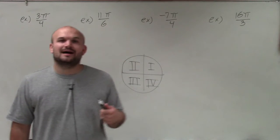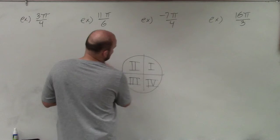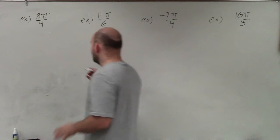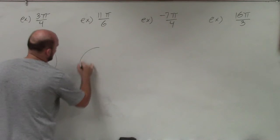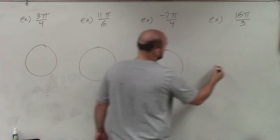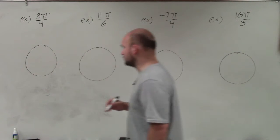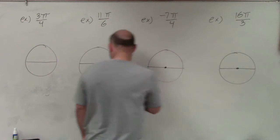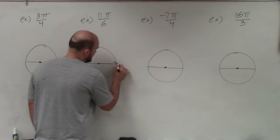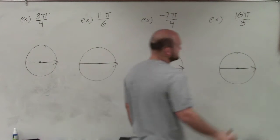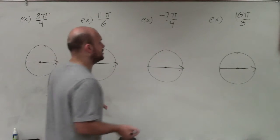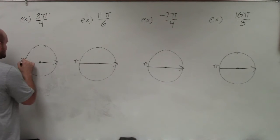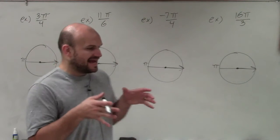I'm going to erase this since I have them memorized, but you'll want to have them written down if you don't. When sketching angles, the main thing I always like to start with is a circle, because we know we're going to be sketching an angle using a circle. I'm going to draw the circle only in half, and I'll explain why in a second. Our central angle has its initial side on the positive portion of the x-axis, and going halfway around the circle is a distance of pi, while going all the way around is 2 pi.